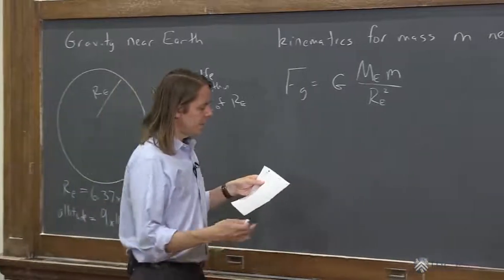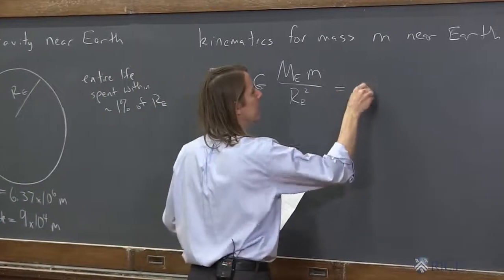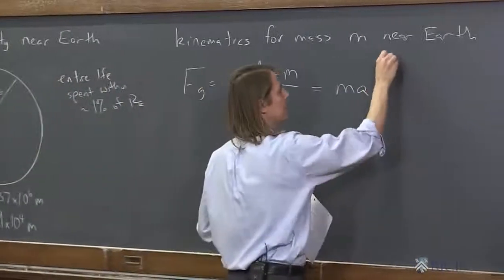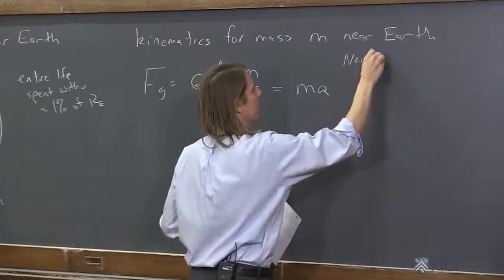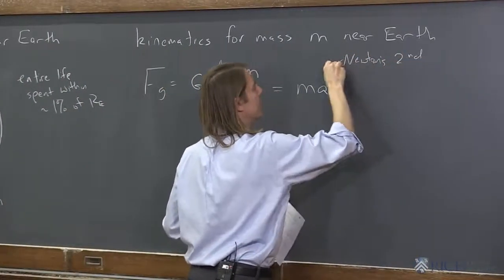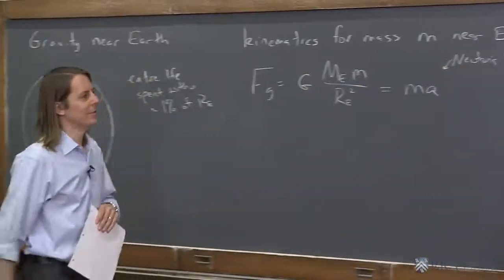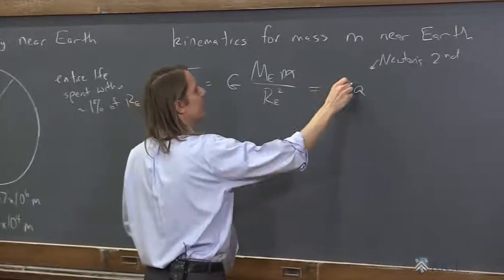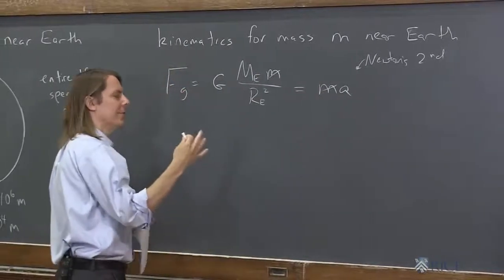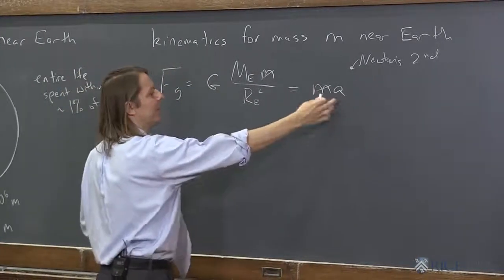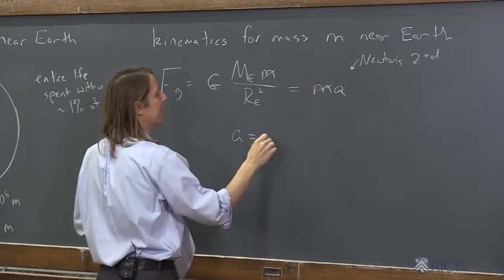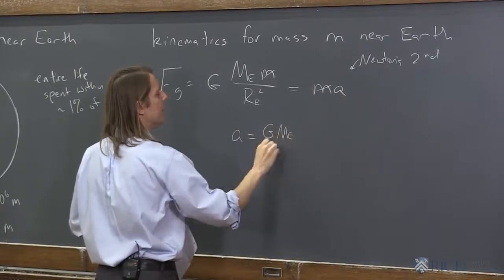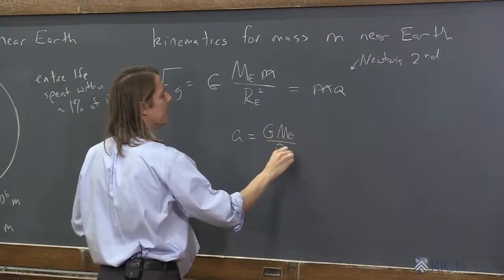So I'm going to set that force equal to MA. This is Newton's second law. We're assuming the only force the mass is feeling is gravity. So look at that, I'll just cancel the mass. And everything feels the same acceleration. The acceleration then that I'm feeling must be big G, mass of the Earth over the radius of the Earth squared.